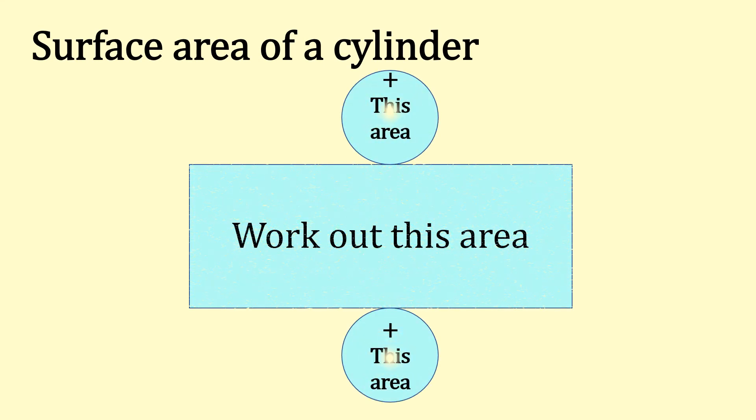Surface area of a cylinder, here we go. So these are the areas we now need to work out. We've got our measurements, three centimeters and we've got a width there, four centimeters.